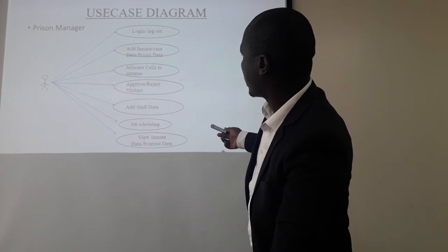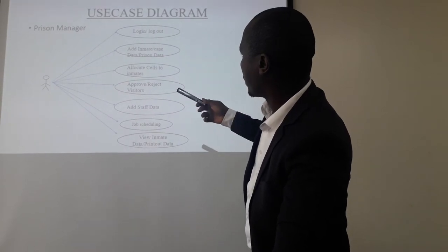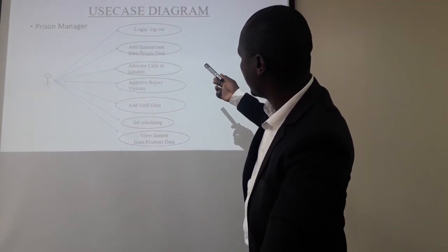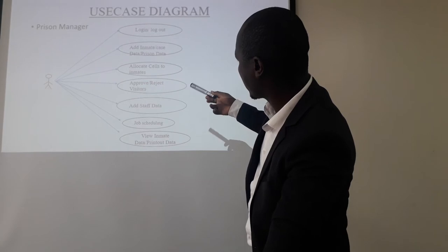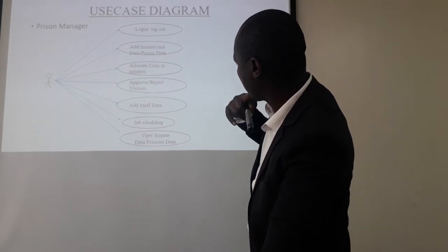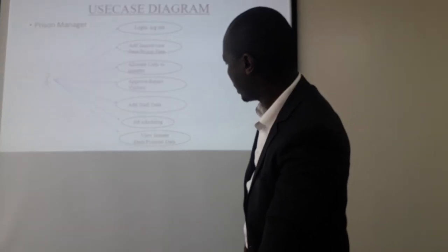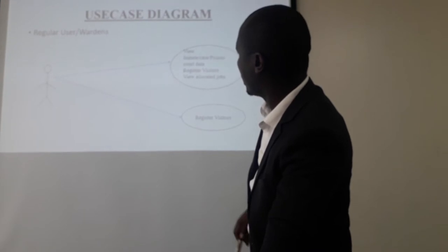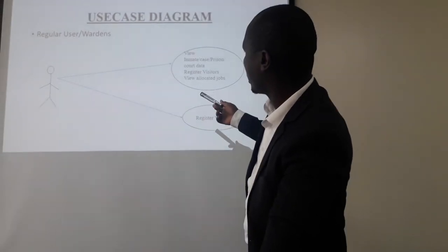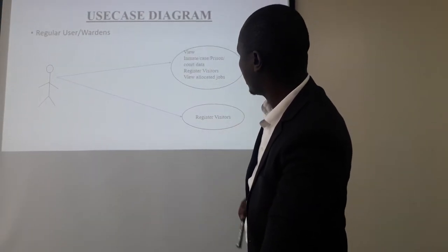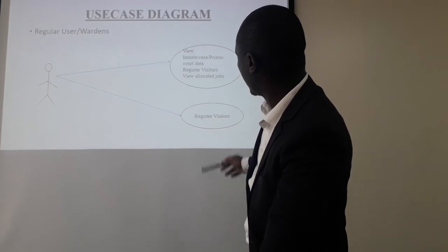The use case diagram for a prison manager includes log in, log out, add data, allocate cells, approve and add staff, job scheduling, and view data. This is for a regular user, which has only two workstations.